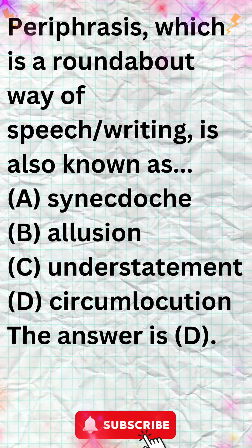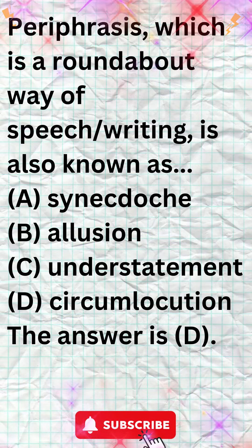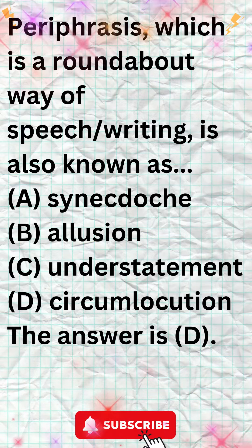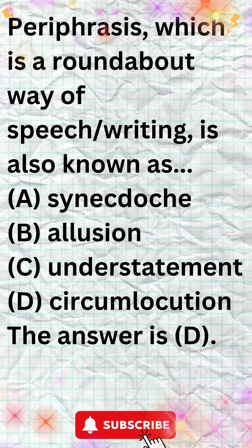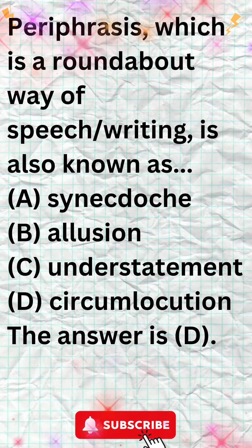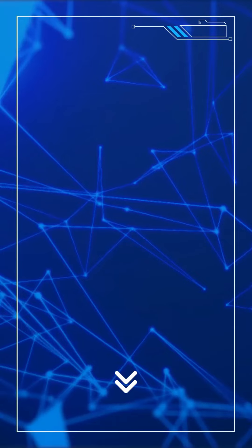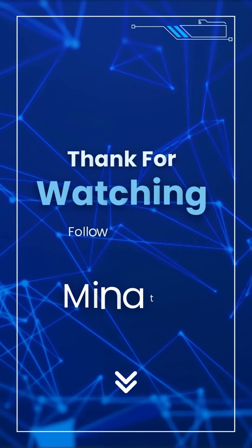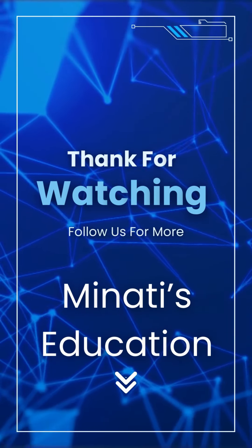Circumlocution can be used for a variety of reasons. It can be used to be polite, to avoid saying something directly, or to make something sound more important or impressive. Thanks for watching. Visit again.